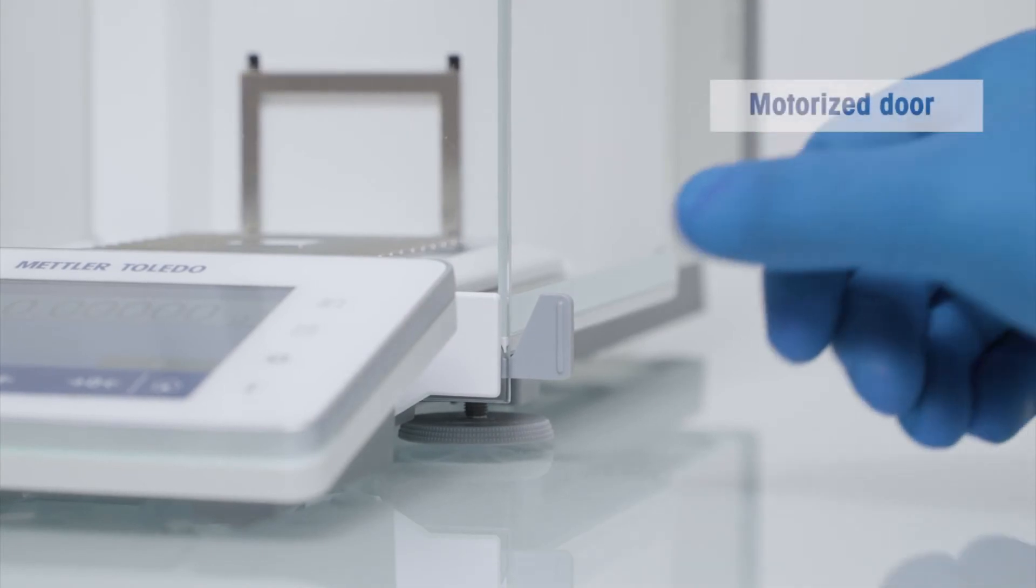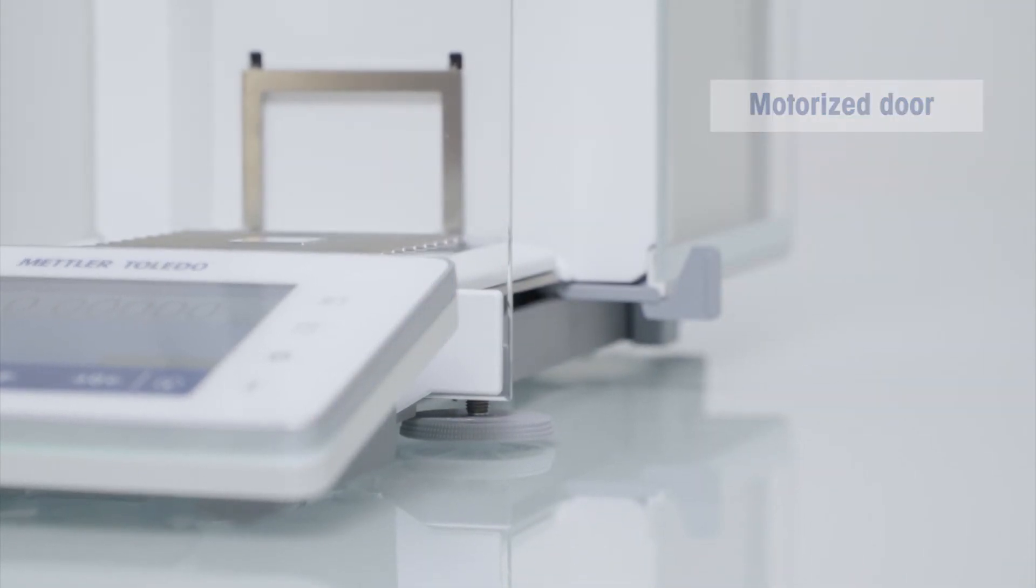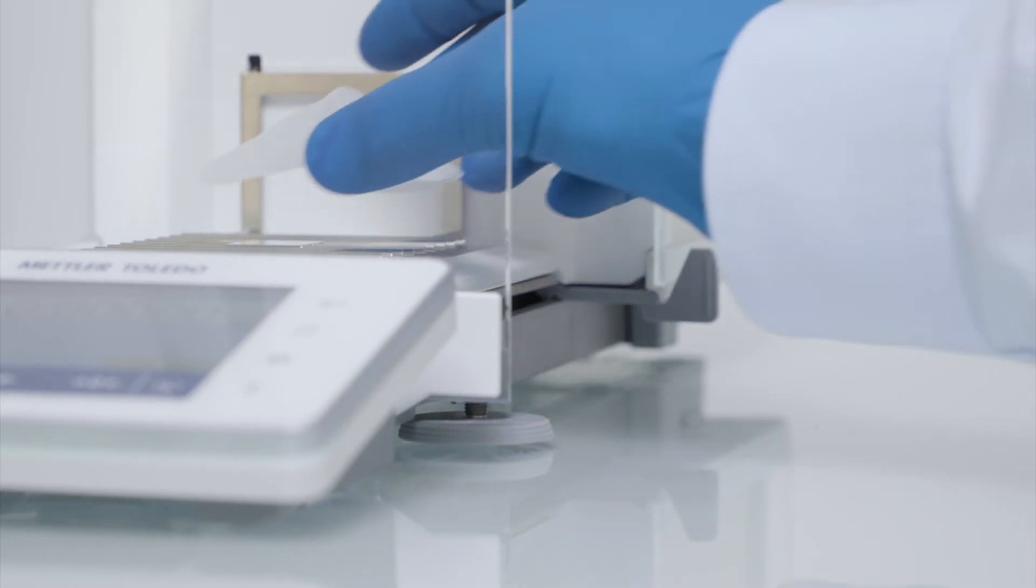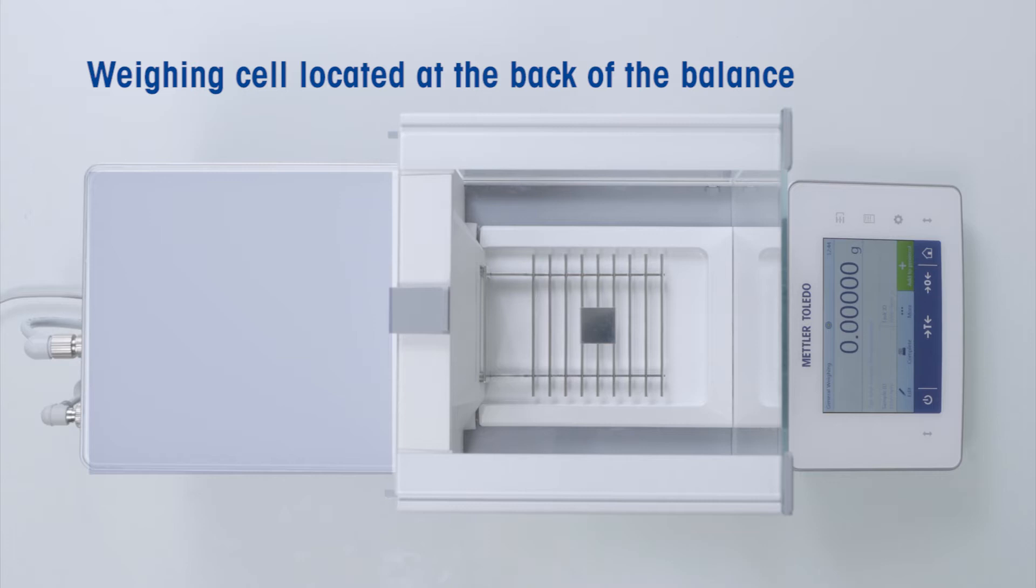The doors can be opened motorized by a gentle touch on the door handles and give good access to the weighing pan which is positioned low and is separated from the weighing cell which is located in the back of the balance.